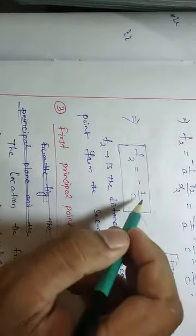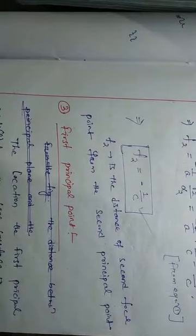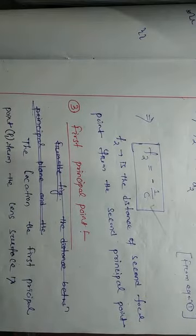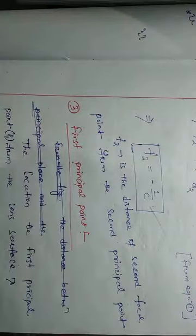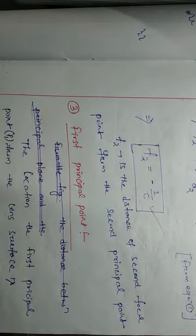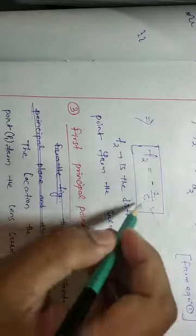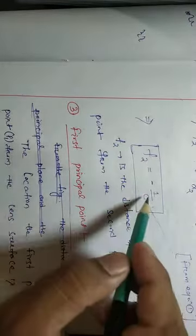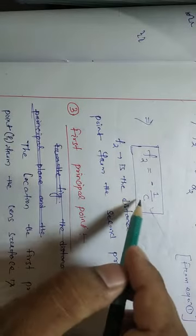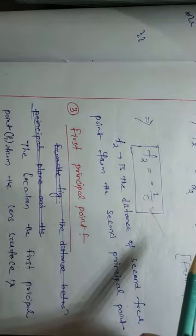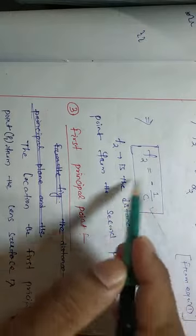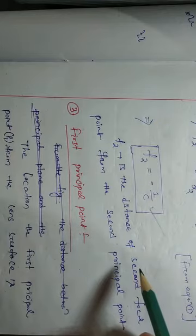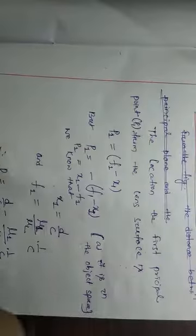These formulas are important because they are required whenever we are going to discuss the Ramsden eyepiece and the Huygens eyepiece. So this was the detailed discussion of how to find the locus of the first and second focal points in a generalized way. Next, we have to discuss the first principal point.